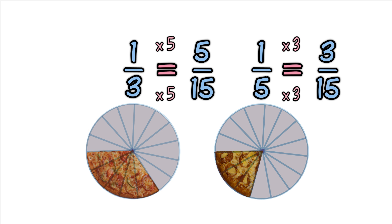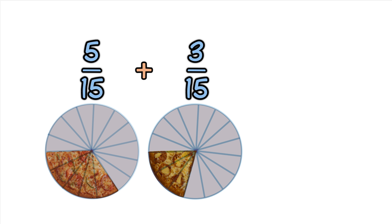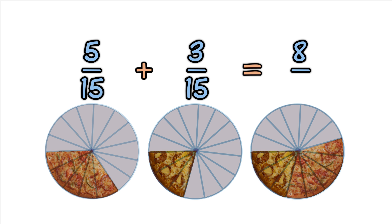The bottom numbers are now the same, so we can go ahead and add the top numbers. 5/15 + 3/15 = 8/15.